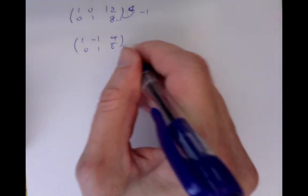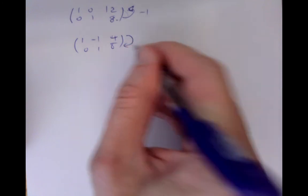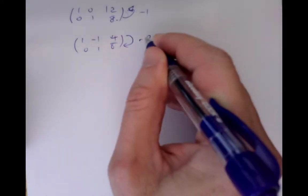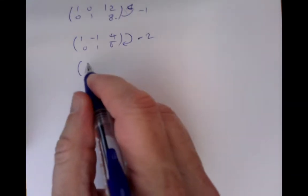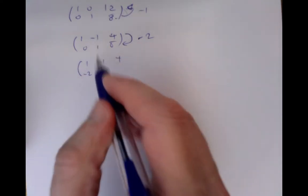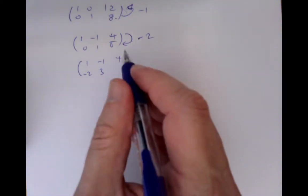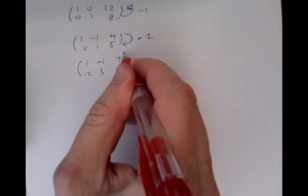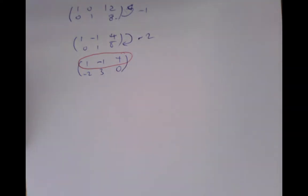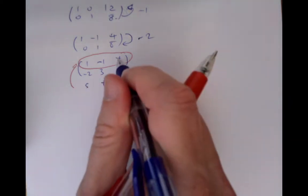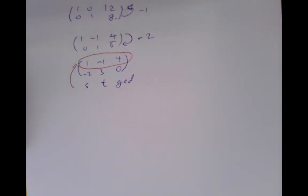Now I'm going to use the smaller number, the 4. We can fit two 4s into an 8, so we add minus 2 of the first row to the second row. The first row doesn't change, and for the second row we get: minus 2 times minus 1 gives 2, added to 1 is 3; and 4 fits neatly into 8 giving us 0. Now we're done. The story comes to an end because we've got a zero here, and this row gives us our useful information: the Bezout coefficients S and T, and the GCD which is 4.